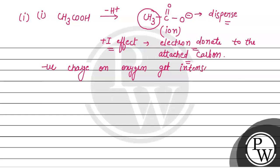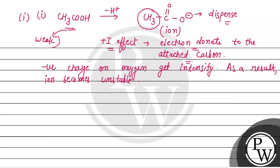तो charge disperse होने की बजाए charge intensify, मतलब increase हो रहा है। As a result, ion becomes unstable। तो इसका मतलब जो हमारा CH3COOH है, वो weak acid है।